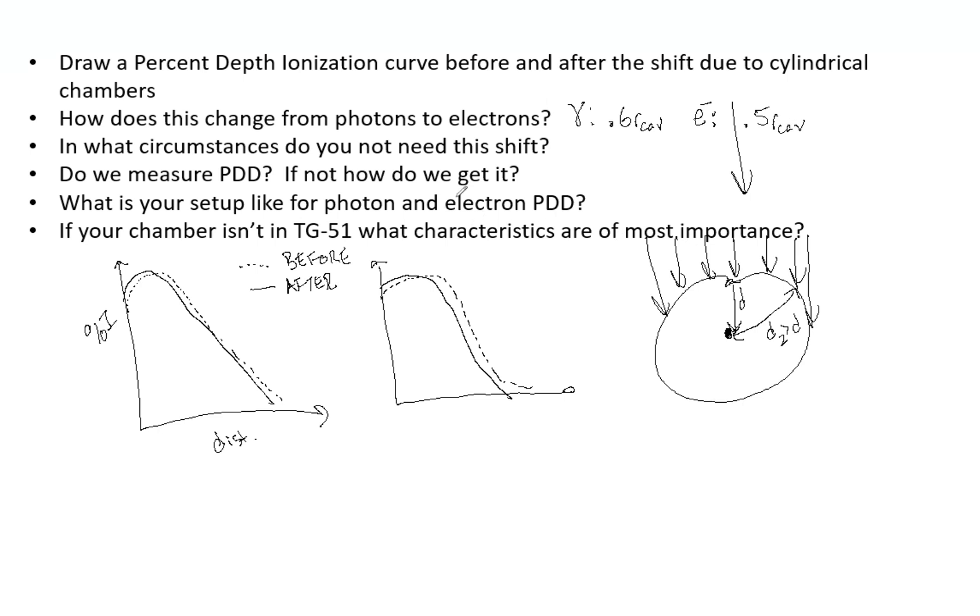So now, in what circumstances do you not need that shift? So if you are using a plain parallel chamber, the effective point of measurement is the point of measurement, meaning the front window of the chamber. So you do not need a shift.